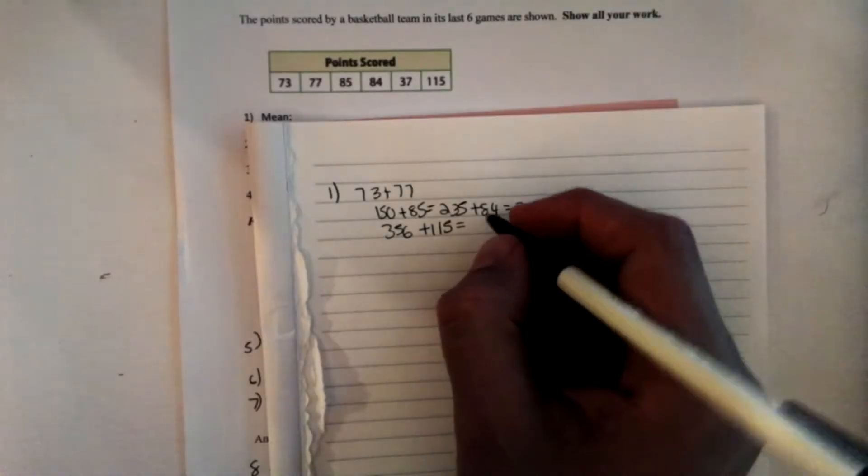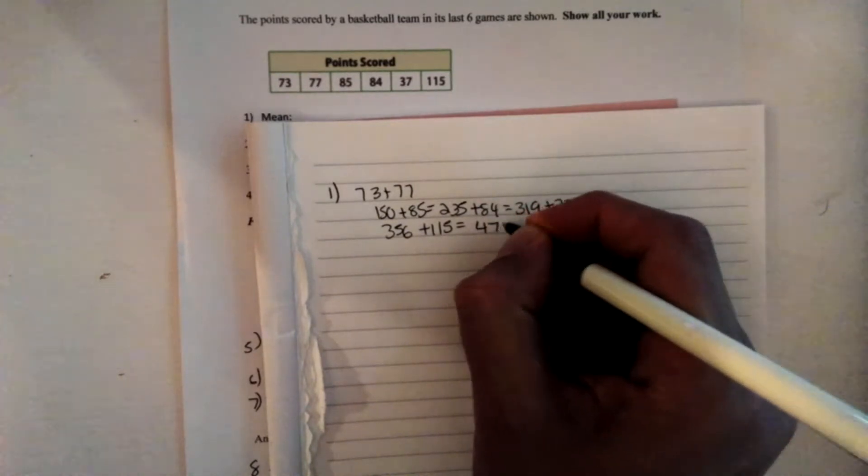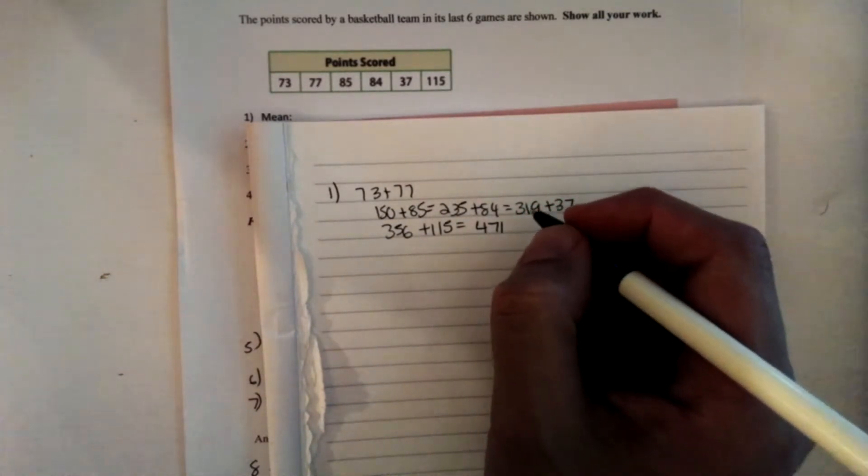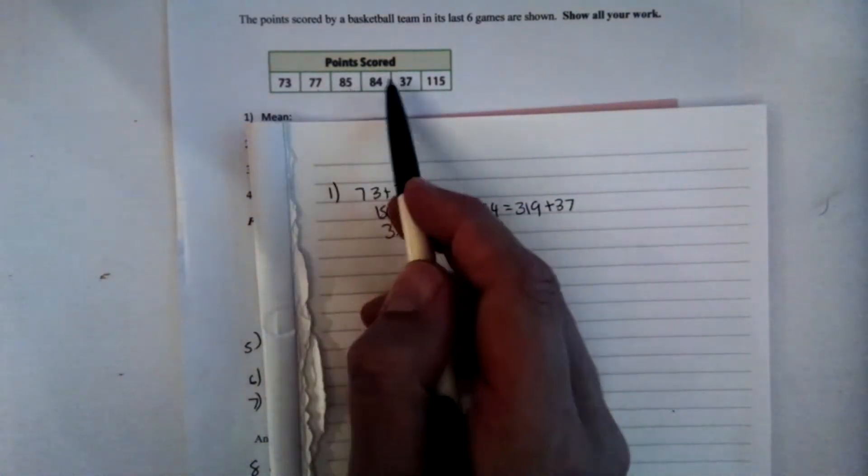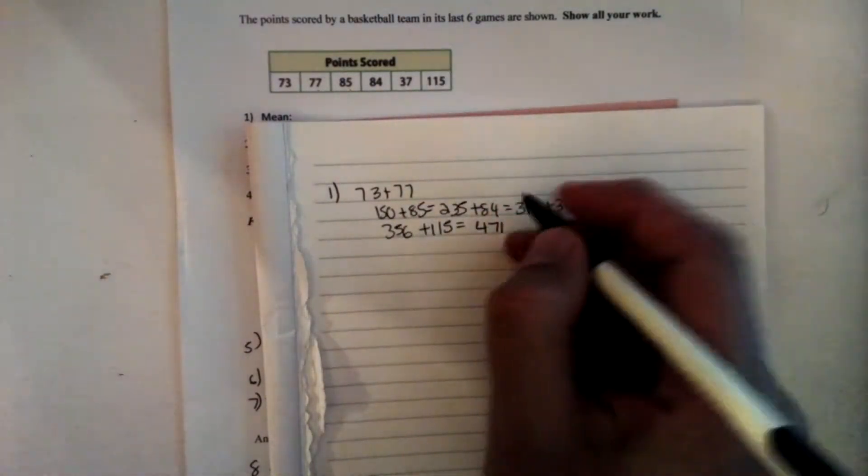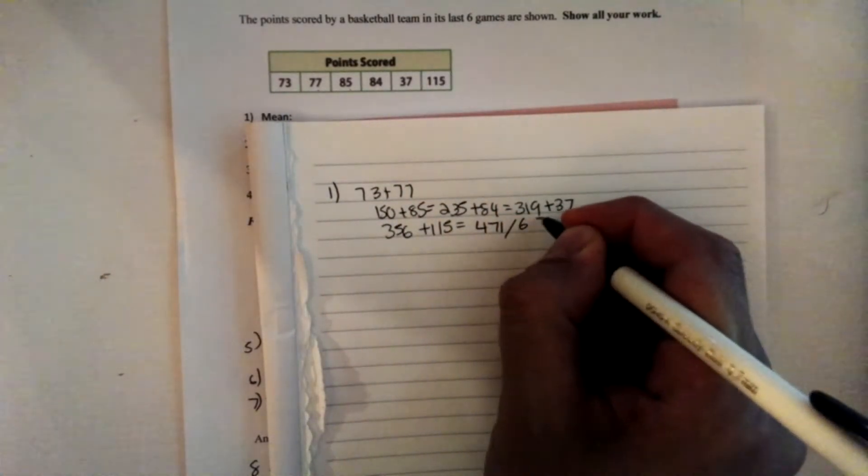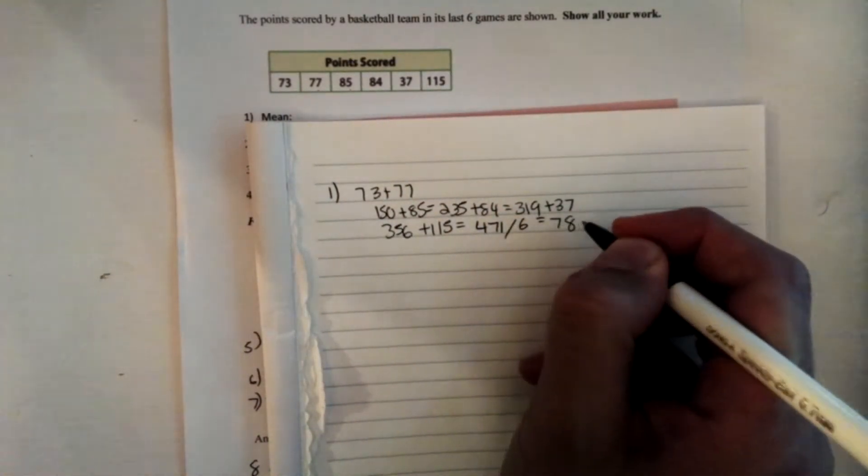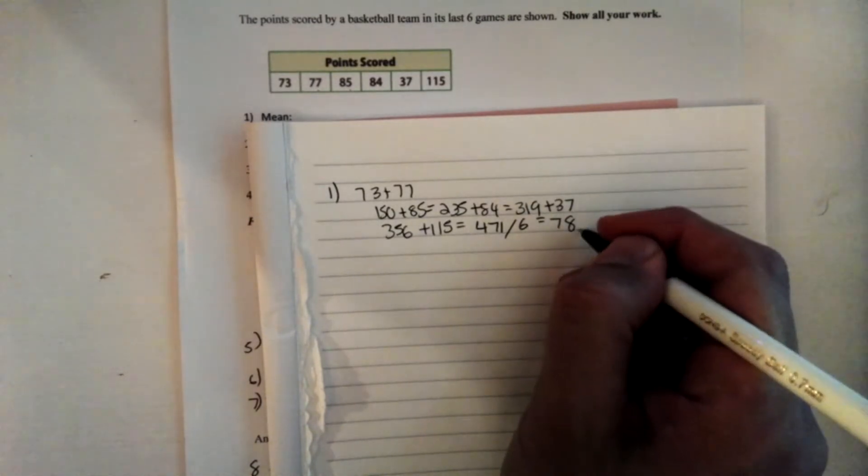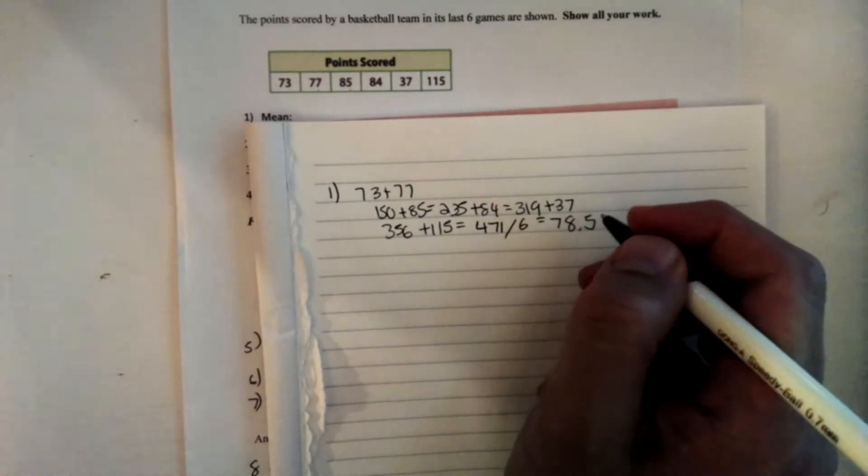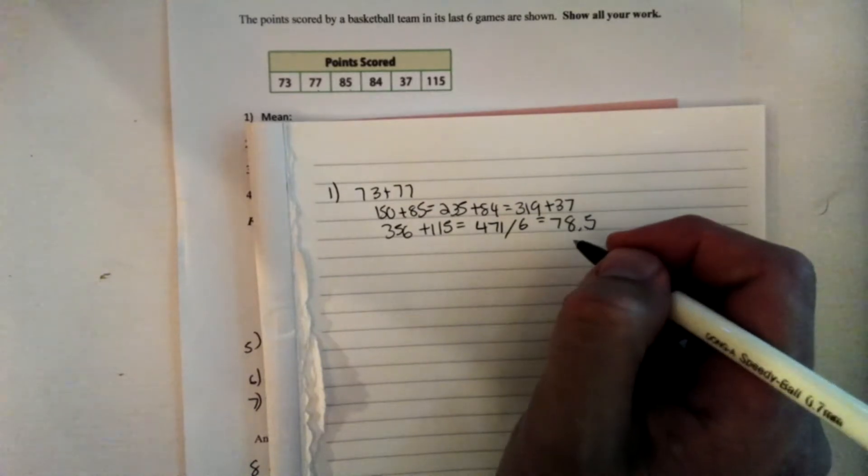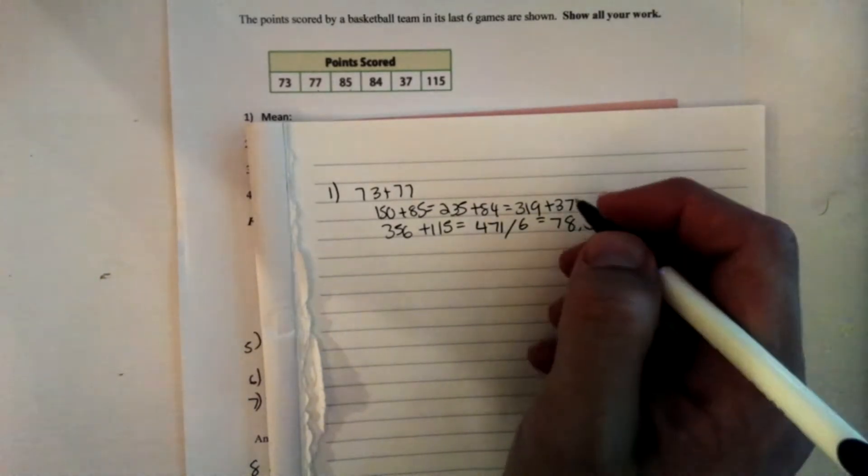When I added all my numbers up, I came up with 471. Since there are 1, 2, 3, 4, 5, 6 numbers, I'll go ahead and divide by 6. And when I divide by 6, I get 78.5. So my mean for this data set is 78.5.